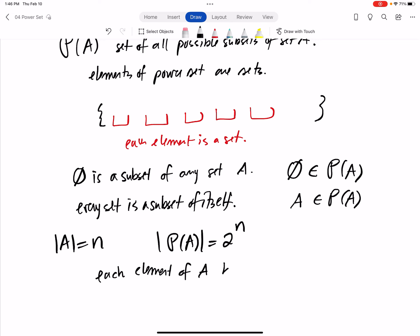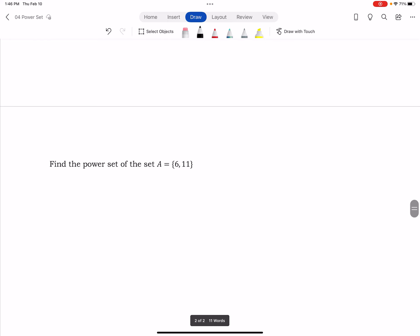This is because for each element of set A, you have two choices. The element can be in your subset you're choosing or not. And so if there are five elements and you take each one and you choose, then there are 2 to the 5th or 32 possible subsets that you could have.